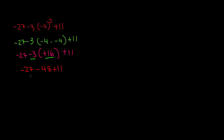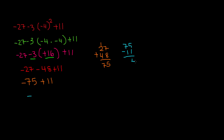The next step is subtraction. We have negative 27 minus 48. We didn't have any multiplication or division in this one, so we skip down to addition or subtraction. Subtraction comes first, so we subtract: negative 27 and negative 48. If the signs are the same — both negative — we keep that sign in our answer but add the numbers. 27 plus 48 gives us 75, so we have negative 75, plus 11. Now we have different signs, so we take the sign of the bigger number, which is 75. Our answer is negative, and 75 minus 11 gives us 64. So our answer is negative 64.